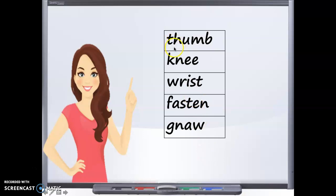Let's take a look at the word thumb. The sounds in this word are th-um. If you notice, I have circled the M-B. The letters M-B stand for the M sound. The B is silent.